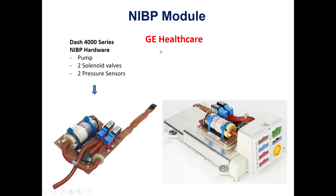Another non-invasive blood pressure module is manufactured by GE Healthcare, used in the DASH series — DASH 3000, 4000, and 5000. This module also has a rolling pump, two solenoid valves, a pressure sensor, and another pressure sensor mounted on the main control board. An additional component is an L-filter used in the system.